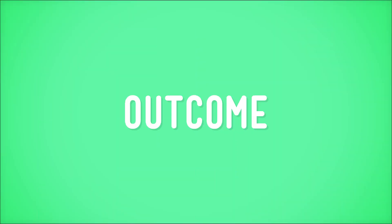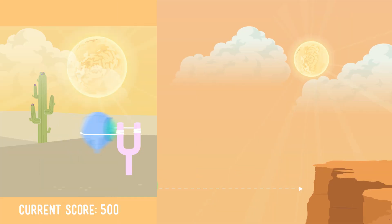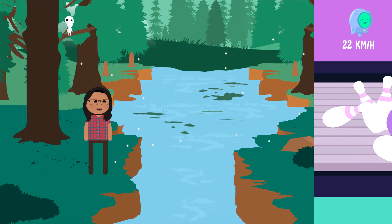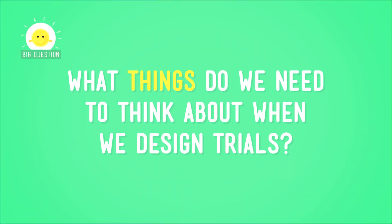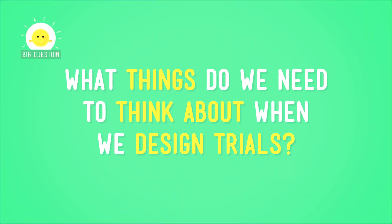When engineers design a solution to a problem, they focus on a specific outcome. And if you've been following us on our engineering adventures through gorges, piles of marshmallows, bowling alleys, and bridges, you know that in order to make sure a solution meets that outcome, engineers do a bunch of trials. But how do we put together everything we've learned about engineering to come up with a test that helps us get the result we want? What things do we need to think about when we design trials?